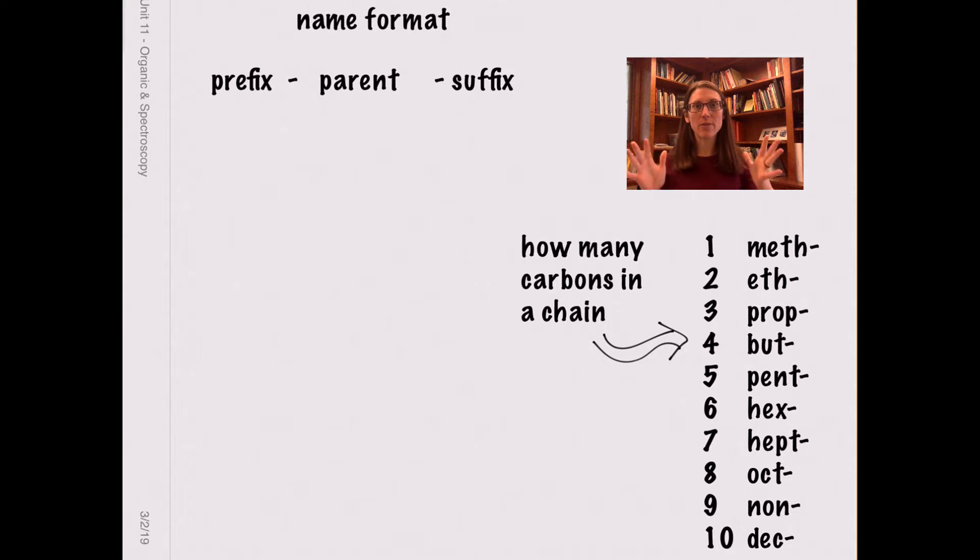Let's talk about the basic format for an organic name. You have a prefix, and that prefix is going to tell you about whatever substituents and branching you have. The parent name is the core, so this is the center of our name, and it's going to tell us how many carbons are in that longest carbon chain. And then our suffix at the end of the name is going to tell us what's the most important functional group that we have in this molecule.